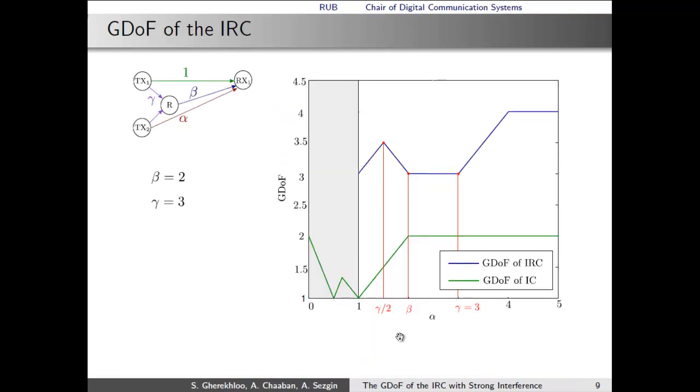Now consider again the GDoF curve we had before. In order to understand the behavior, it is important to keep in mind the threshold points here and here and here, as GDoF is basically changing its behavior. This is when alpha is equal to gamma over 2, when alpha is equal to gamma minus beta, and when alpha is equal to gamma equal to 3.